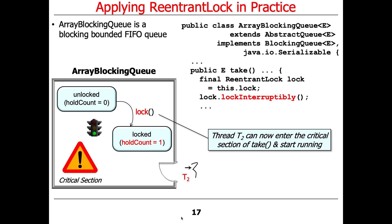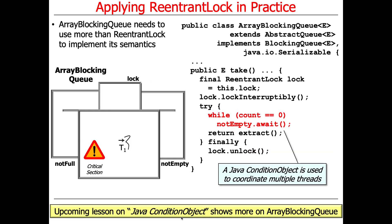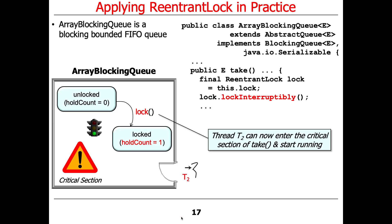Now that the lock is released and thread T1 has gone away, thread T2 can get into the critical section and it will increment the hold count from zero to one. So that's the protocol: you don't get into the critical section as long as someone else owns the lock; once they release it, you get your chance.